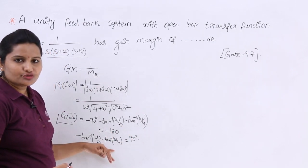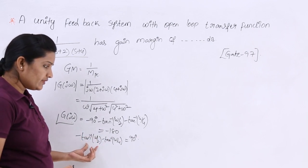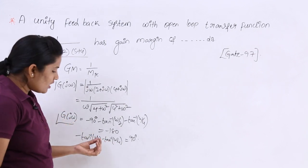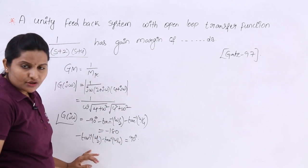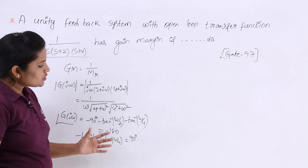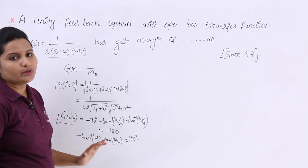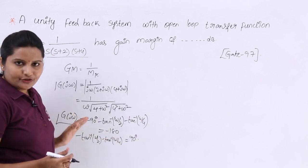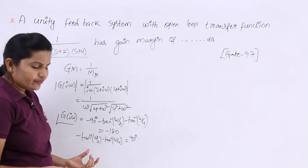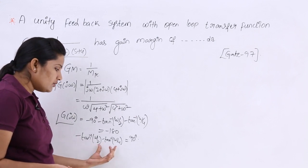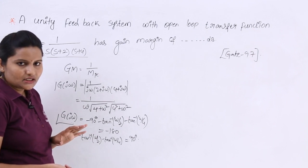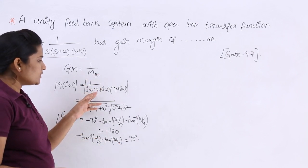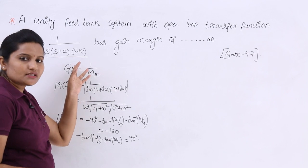At this point, since we have two tan inverse terms, we don't know how to simplify further — we would need to use an inspection method to get the exact ω. This is where the conventional process gets stuck. Once we have that angle, we would substitute into the magnitude expression to get the magnitude, and then substitute into the gain margin formula.